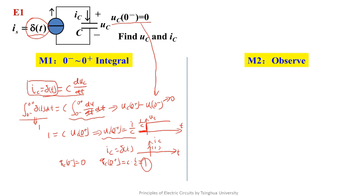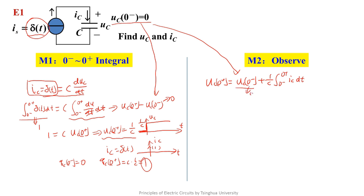We know that the differential relationship between the capacitor's voltage and current gives: uc(0+) equals uc(0−) plus 1/C times the integral of Ic from zero-minus to zero-plus. Because the initial condition is zero-state, this first part is always zero. Now we need to know if Ic is an impulse function from zero-minus to zero-plus. If it is an impulse function, we use this formula to solve. If it is not, then this integral is zero and uc(0+) equals zero. But how do we know if Ic is an impulse function? We don't know.